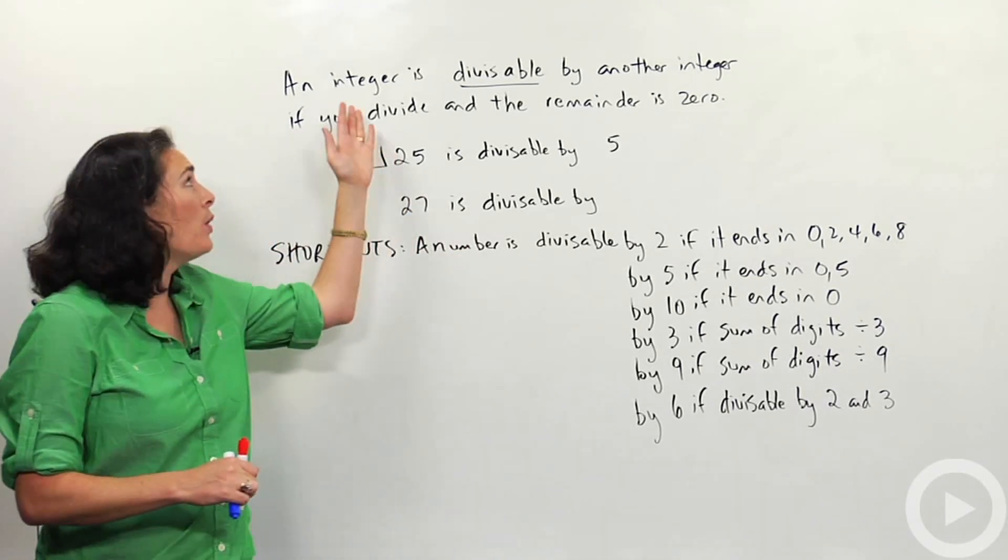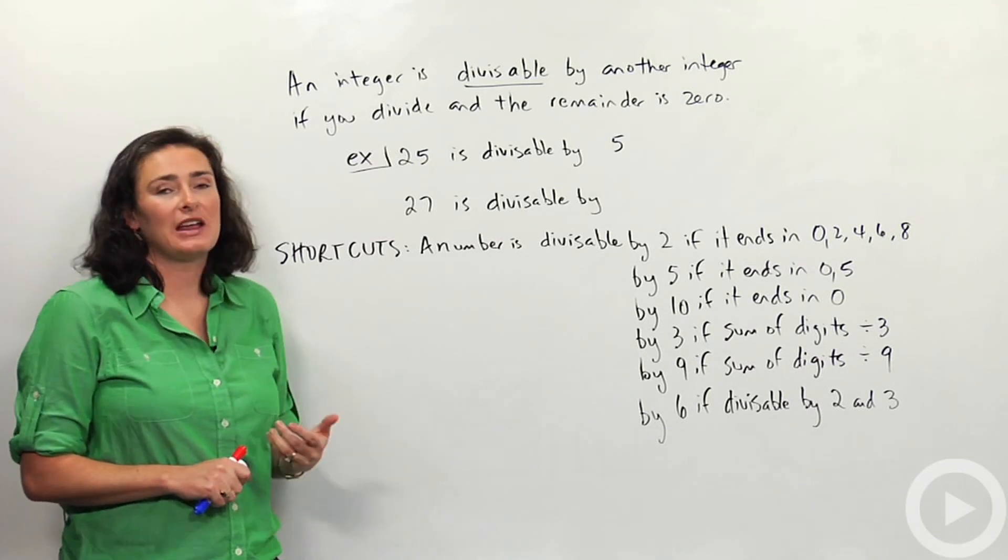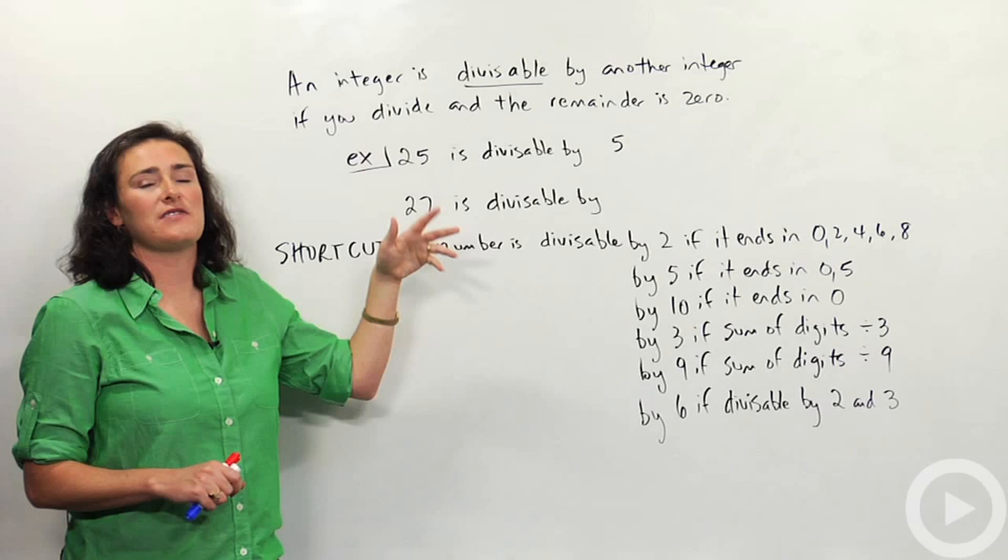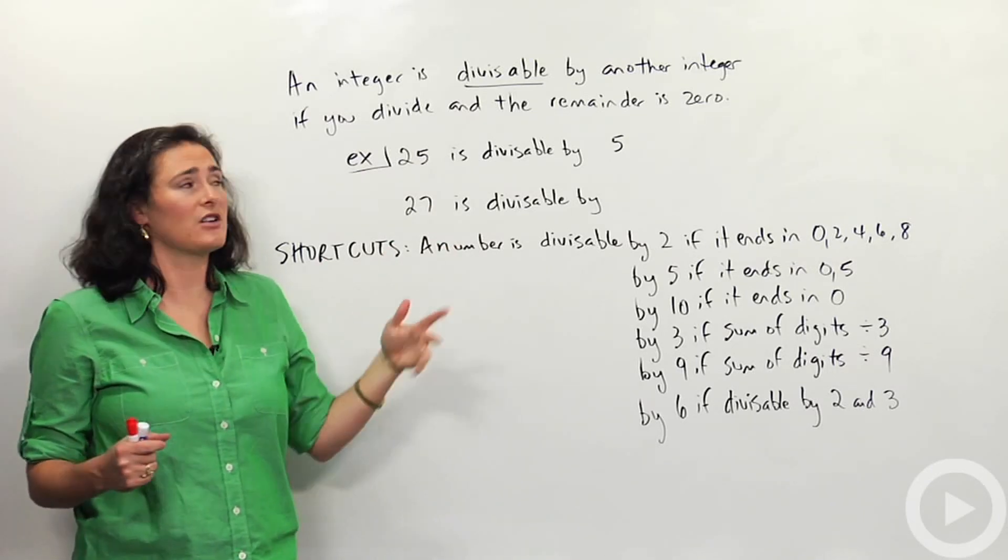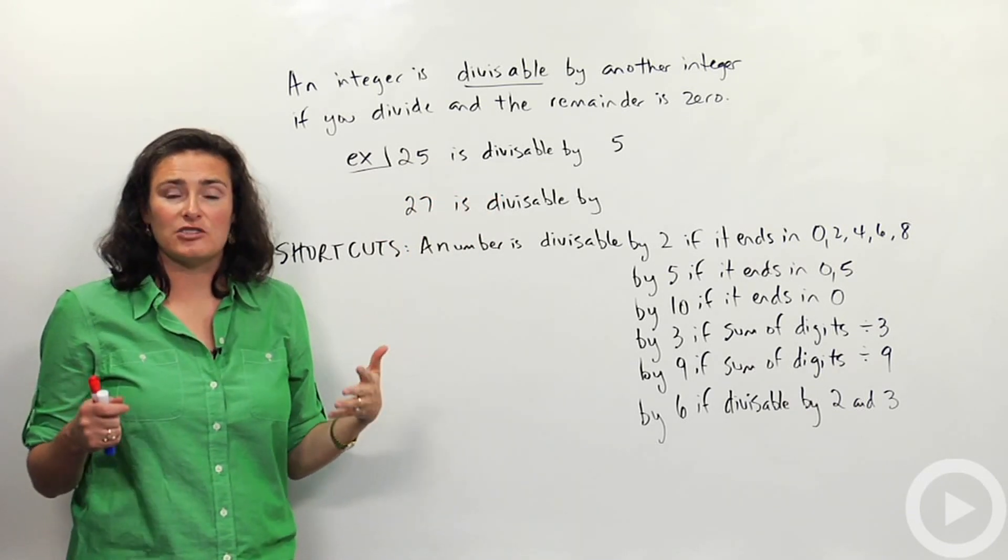We say that one integer is divisible by another integer if you divide and the remainder is 0. For example, let's say I wanted to look at 25 and I tried doing 25 divided by 5. If I do 25 divided by 5, I get 5 remainder 0.